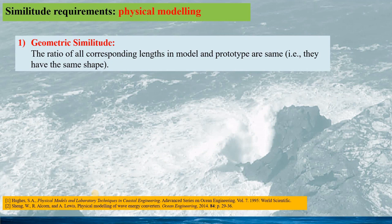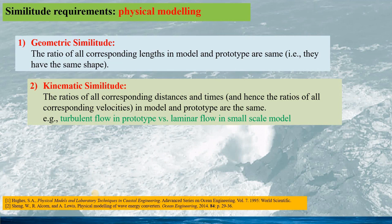For a successful scale modelling, we have three similitudes. The first is geometric similitude, for which the scale model must be geometrically similar to the full-scale structure — meaning in all directions the lengths must be proportionally correct, and in some special circumstances the structure surface must be scaled. The second similitude is kinematic similitude, corresponding to motion similarities. For instance, if we have laminar flow in the small scaled model but turbulent flow in the full structure, the kinematic similitude is not satisfied.